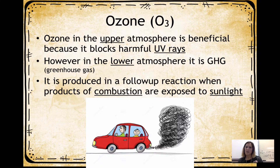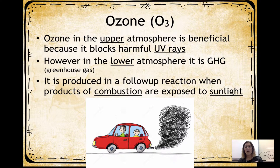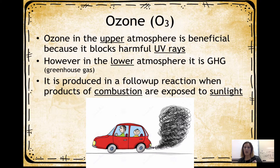Our ozone layer is our protective layer around the Earth, located in the upper atmosphere. It is very beneficial because it blocks harmful UV rays. Ozone, or O3, is three oxygen molecules bonded together — much different from O2 that we breathe. However, in the lower atmosphere, ozone is a greenhouse gas that allows the Earth to warm up. It is produced when products of combustion, like from car engines, are exposed to sunlight and rise up into our atmosphere.